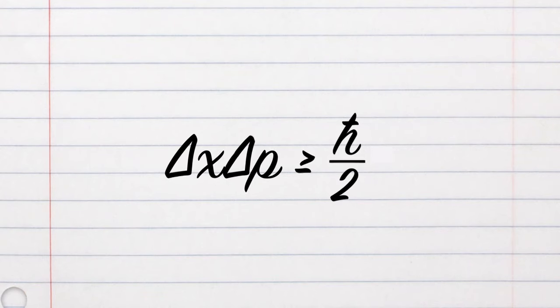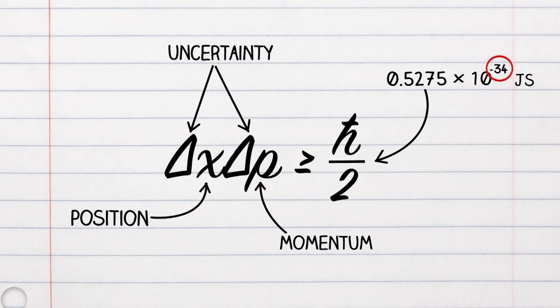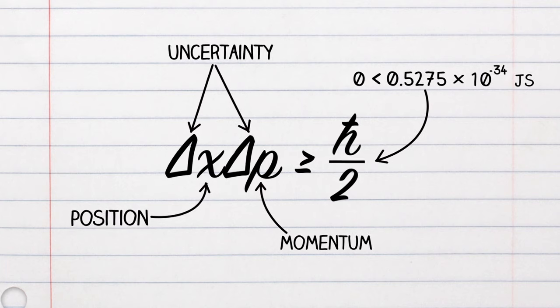Now let's come back to our equation. These triangles mean uncertainty, this X means position, and this P means momentum. This H-bar over 2 is a teeny tiny little constant — don't worry about the exact value right now. The important thing is that it's greater than zero. So the equation tells us that the uncertainty in position and the uncertainty in momentum is always greater than zero — we have to have some uncertainty somewhere. As we saw from Heisenberg's experiment, this had nothing to do with the equipment he was using. Unless we find a way to make wavelengths shorter without increasing energy, we're screwed.